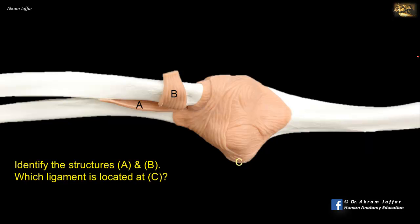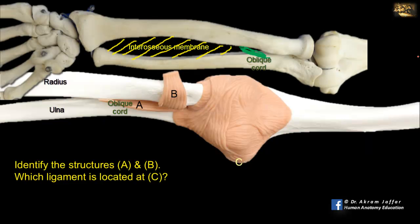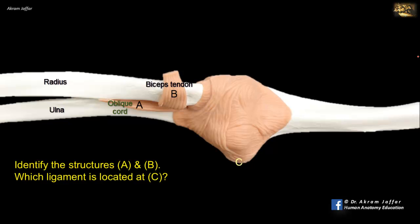Identify the structures A and B. Which ligament is located at C? A is a fibrous band or ligament extending downward and laterally between the proximal ulna and radius — it is called the oblique cord. Its fibers run in the opposite direction to those of the interosseous membrane of the forearm, and its function is not entirely clear. It may simply be an additional tie between the radius and ulna, aiding other soft tissue structures such as the annular ligament and interosseous membrane to bind the two bones together. B is the biceps tendon, and this is inserted into the radial tuberosity.